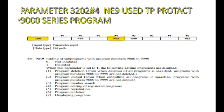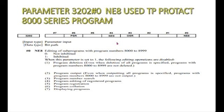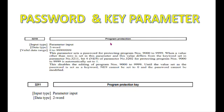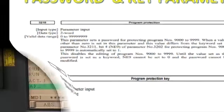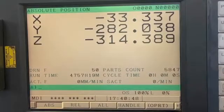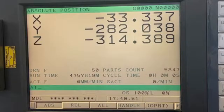Now I'm going to show you how this ANY9 function is used in FANUC. Basically, this ANY9 function is used to protect program numbers starting from the 9000 range until 9999. There is also another ANY8 key which is used to protect program numbers starting from the 8000 range.